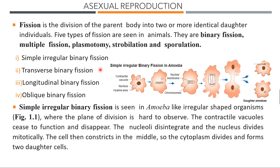Binary fission has four subtypes: simple irregular binary fission, transverse binary fission, longitudinal binary fission, and oblique binary fission. In simple irregular binary fission in Amoeba, the amoeba has an irregular shape, so the plane of division is hard to observe. The contractile vacuole disappears and the nucleolus disintegrates. The single nucleus divides mitotically producing two nuclei. The cell constricts in the middle, the cytoplasm divides, and two daughter amoeba are formed, each with a new contractile vacuole and nucleus.